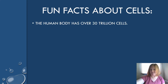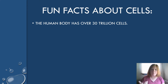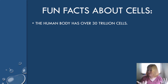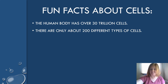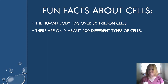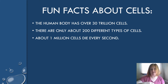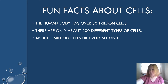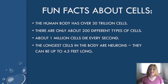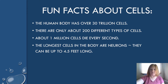Some fun facts about cells: the human body has over 30 trillion cells, though there are only about 200 different types of cells in the human body. About a million cells die every second, which is why replacement is so important. The longest cells in our body are neurons — they can be up to 4.5 feet long, going from the base of your spinal cord to the tip of your toe.